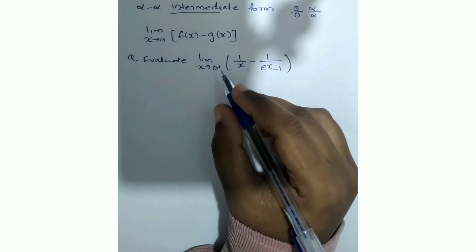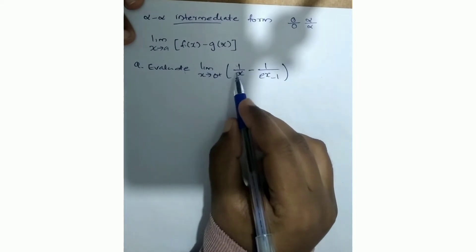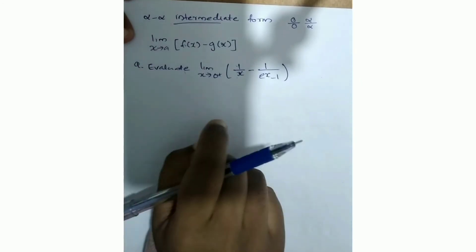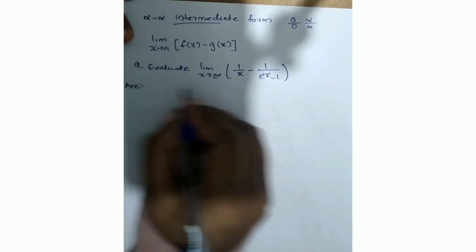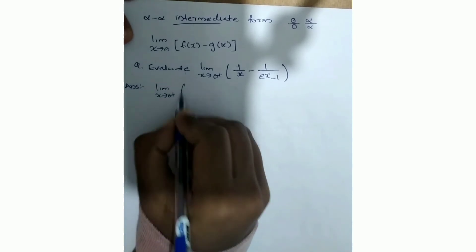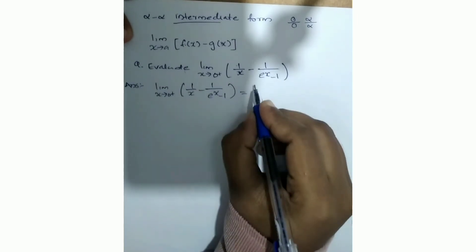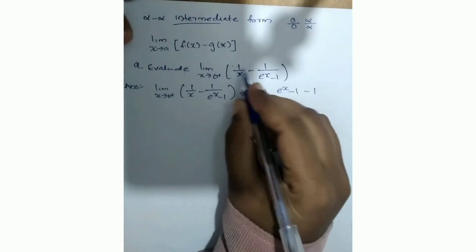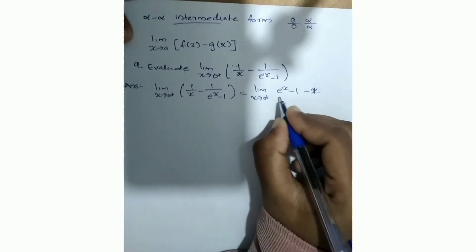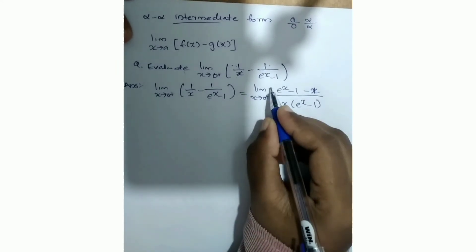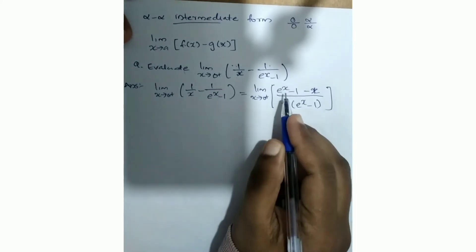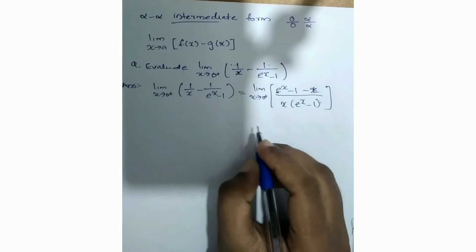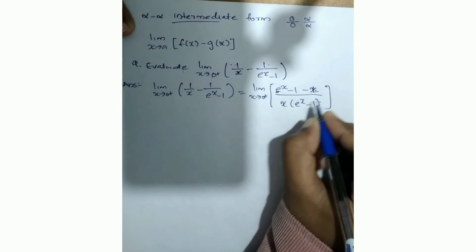We have two functions: 1/x and 1/(e^x - 1). To handle this, we combine them: limit x tends to 0+ of (1/x - 1/(e^x - 1)) equals limit x tends to 0+ of (e^x - 1 - x) divided by x(e^x - 1). We cross-multiply to get a single fraction, and then apply the L'Hôpital's rule by differentiating the numerator divided by the denominator.